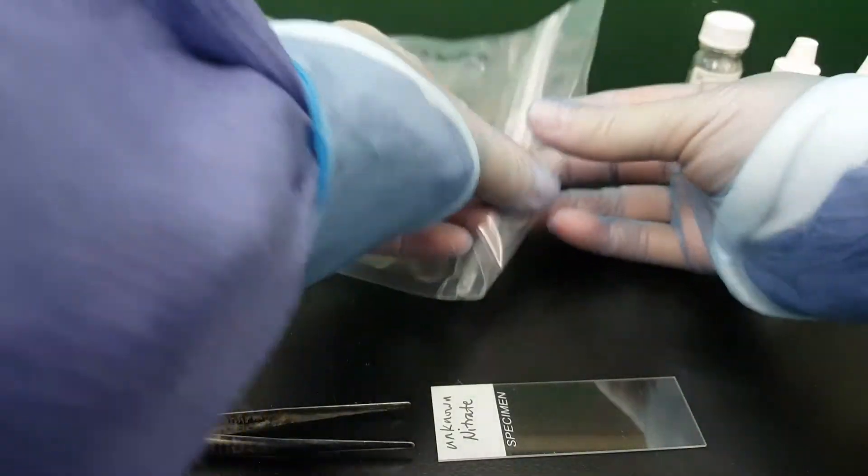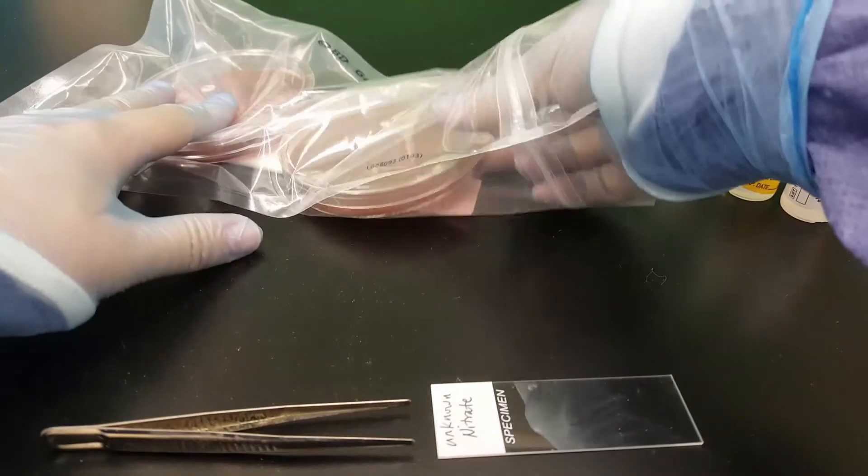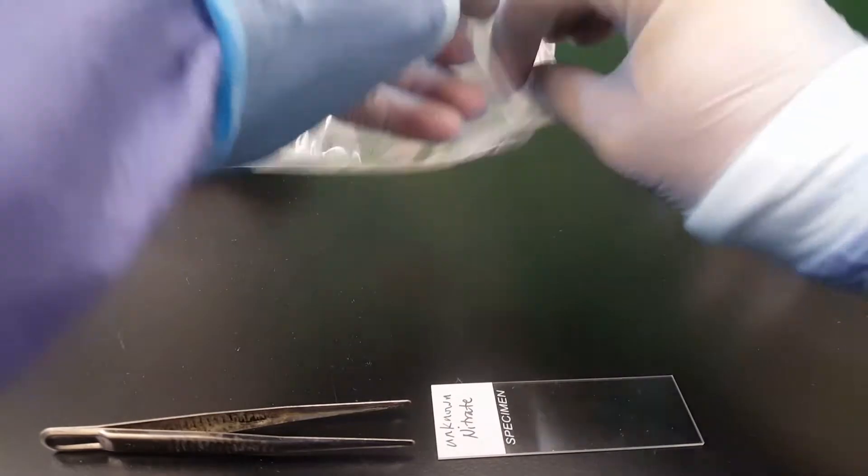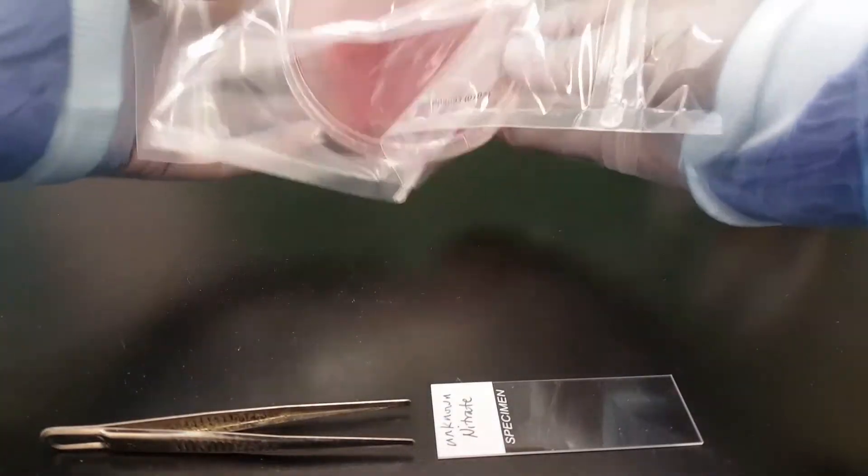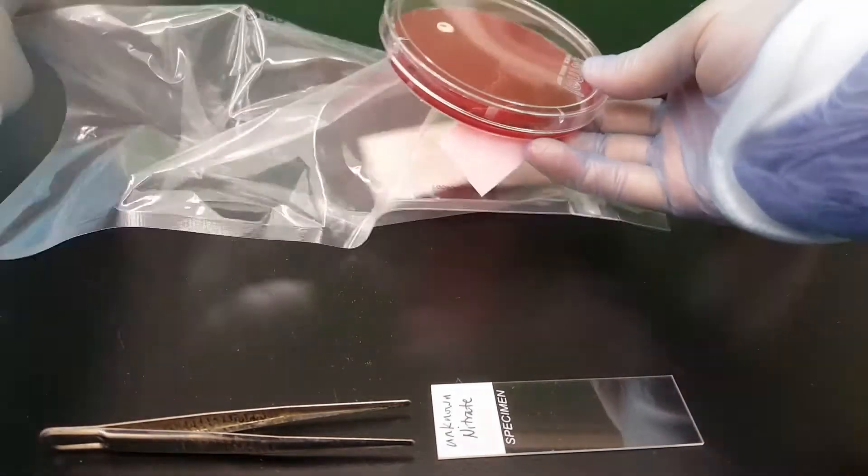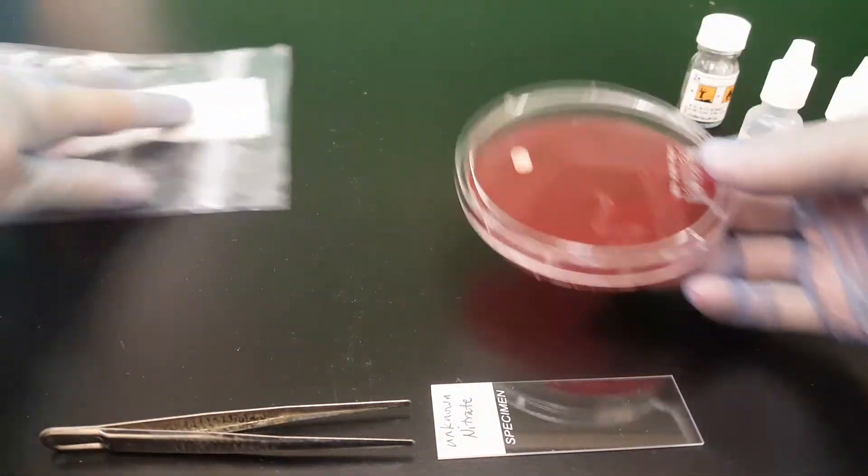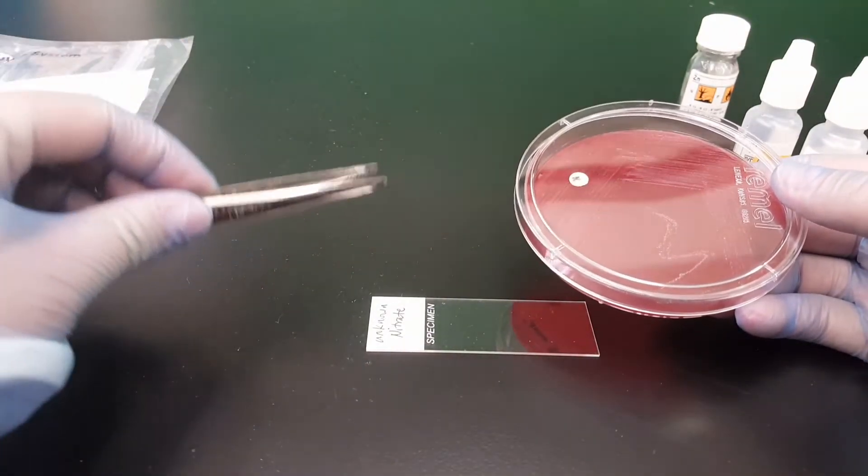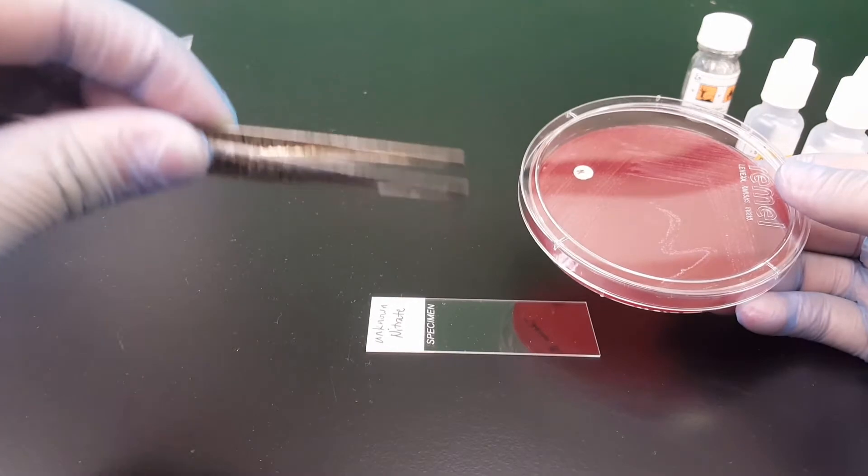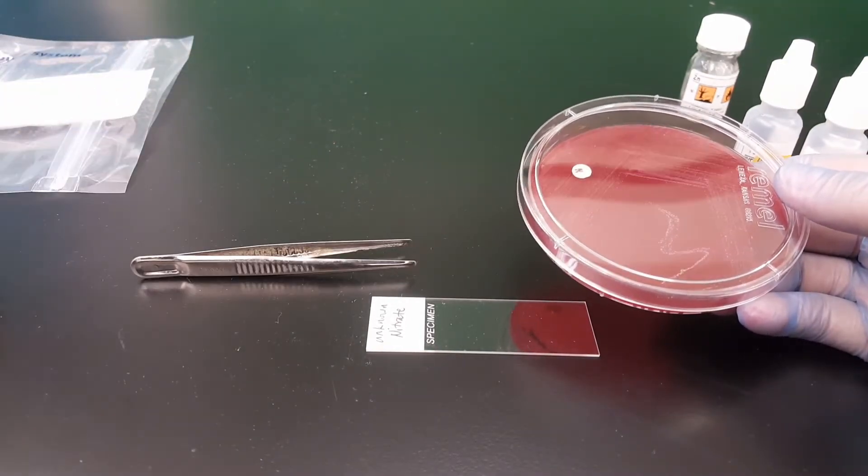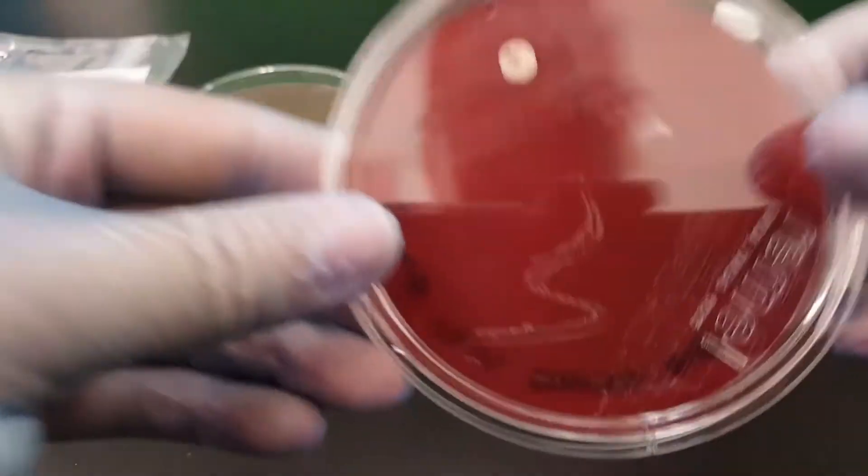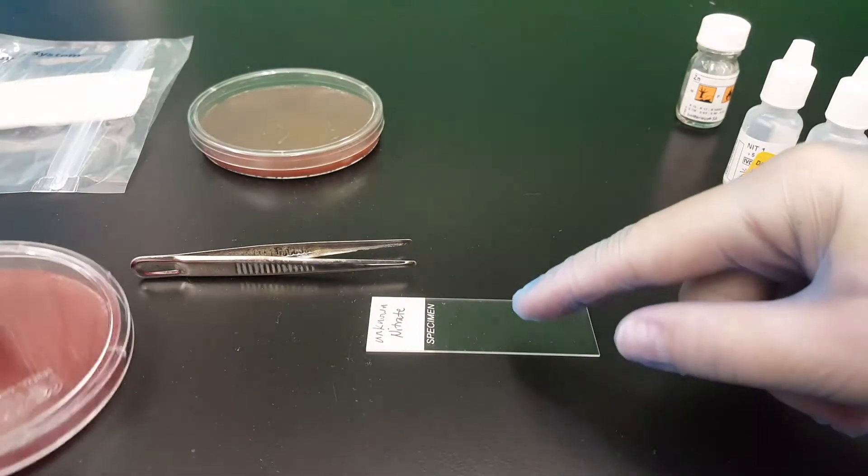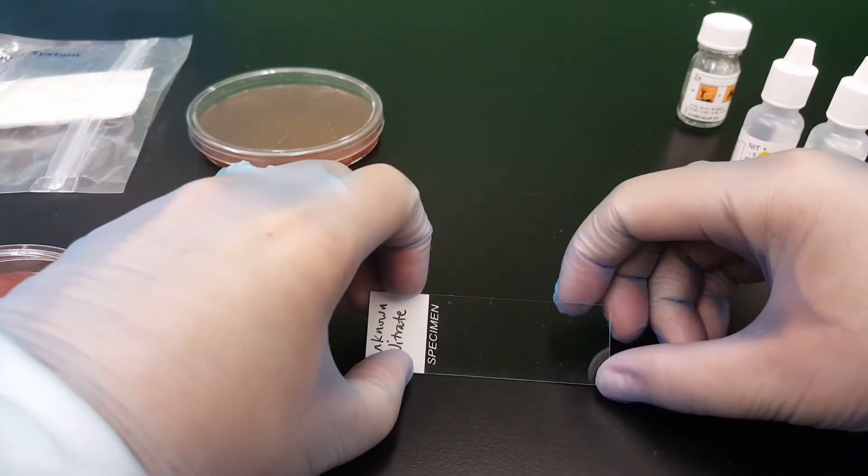So when we do the nitrate reduction test using the nitrate disc, we're going to take the 24-hour incubated disc off of the plate and we're going to put it onto this slide right here using these little forceps. Make sure they're clean and dry when you use them.